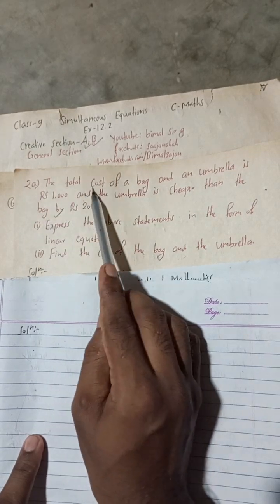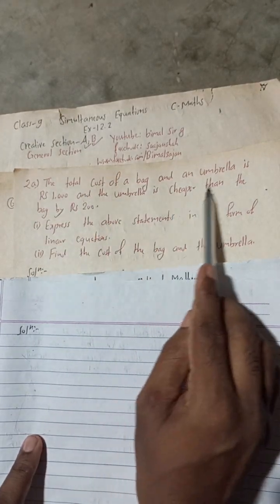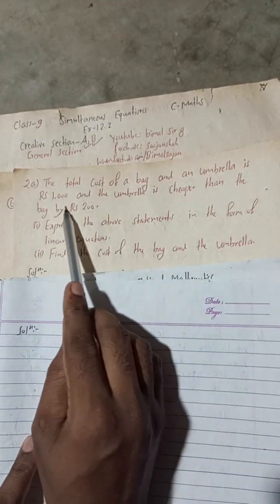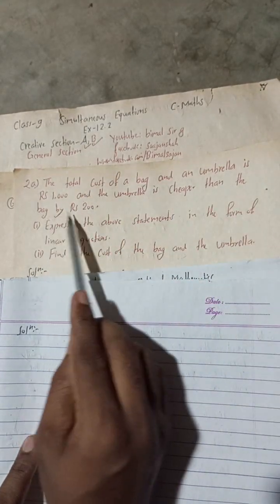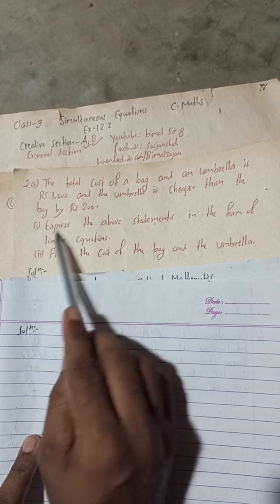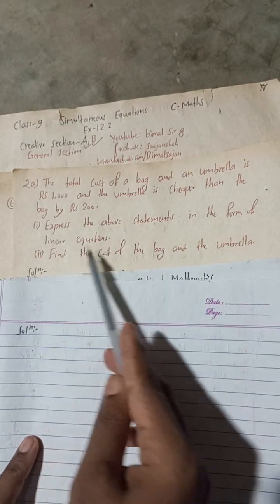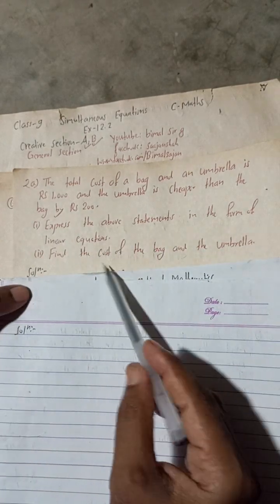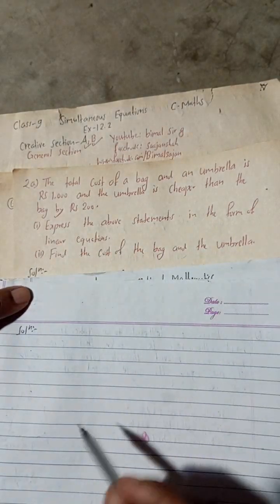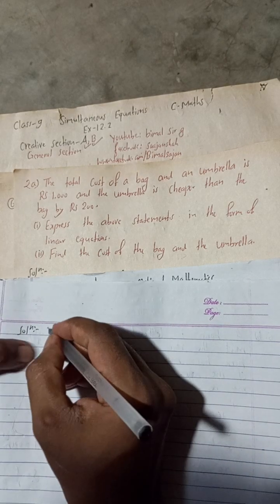Now this question is: the total cost of a bag and an umbrella is Rs 1000, and the umbrella is cheaper than the bag by Rs 200. Express the above statements in the form of linear equations, and find the cost of the bag and the umbrella.